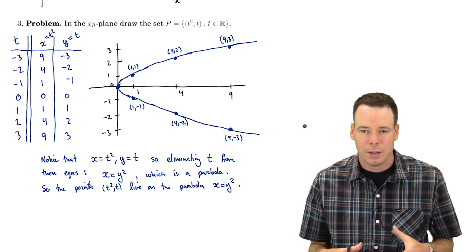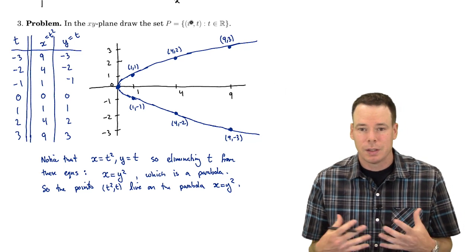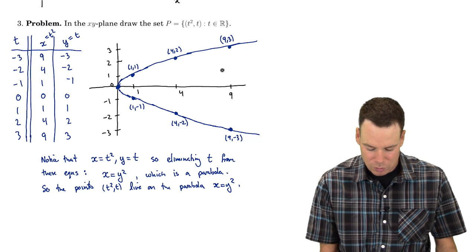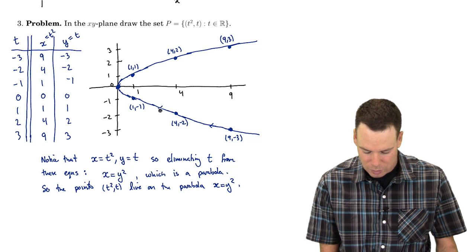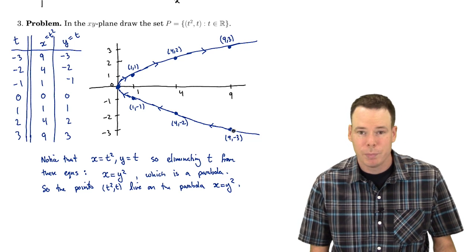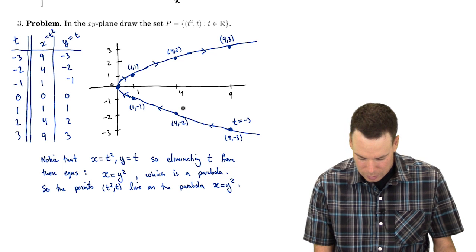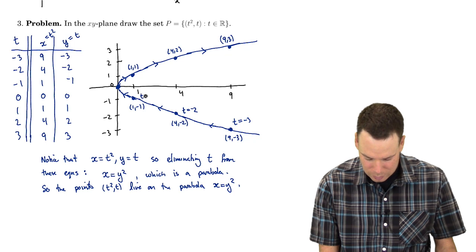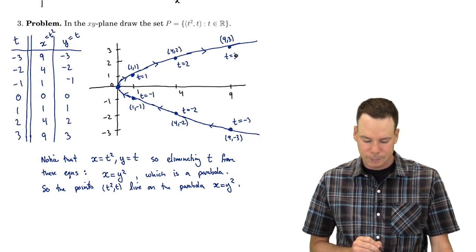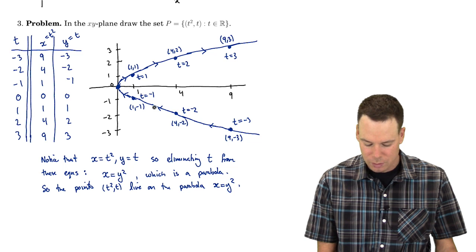But there's something more that we get here — not just the parabola, but extra information about how these points are laid out on it. Imagining these as describing a particle moving in the plane, as time increases the particle moves in a specific direction along the curve. I can label the points by their parameter value t: t equals negative 3, then negative 2, then negative 1, 0, 1, 2, and 3. So the particle moves along the parabola in this direction as t increases.